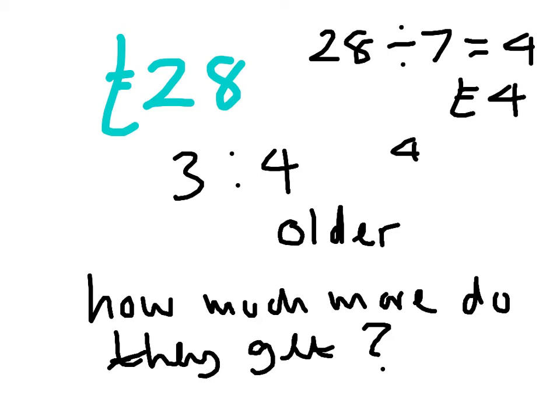the older person gets 4 fours, which is 16, and the younger person gets 3 fours, which is 12, and the difference is 4. So either way, the answer is 4.